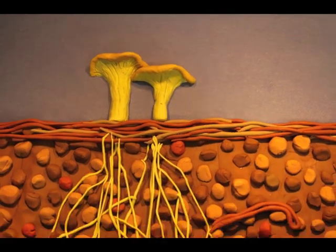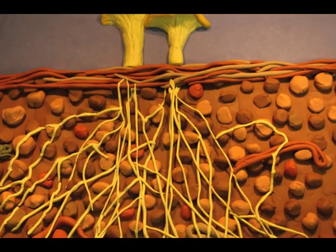Beneath the flashy fruiting bodies, microscopic threads called hyphae extend throughout the soil.